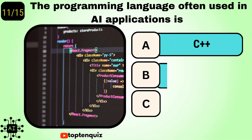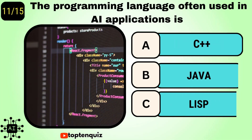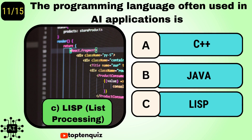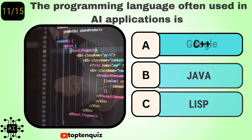Question number 11: The programming language often used in AI applications is? The answer is Lisp, or list processing.